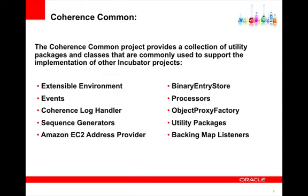There's a Coherence Log Handler that will take Java-util-based log messages and write them to the Coherence logging. We have Sequence Generators, which is a set of interfaces and classes that simplify the creation of sequence numbers either locally or across the cluster. We have an Amazon EC2 Address Provider, which is an Address Provider implementation that simplifies deploying Coherence in EC2. EC2 does not support multicast, and this Address Provider provides a simple way of managing deployments in EC2.